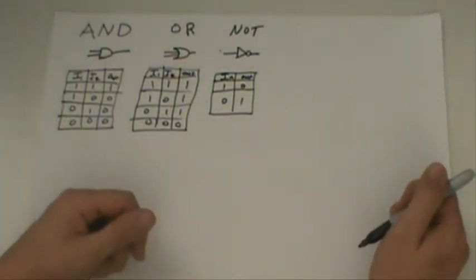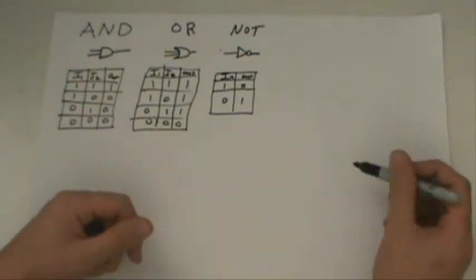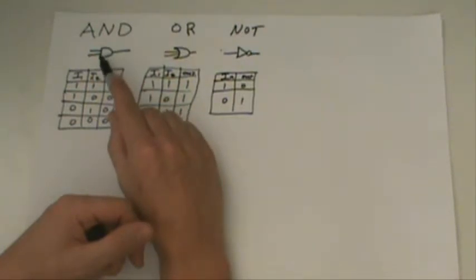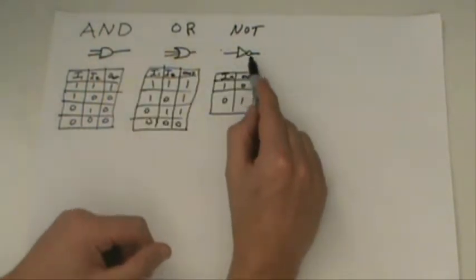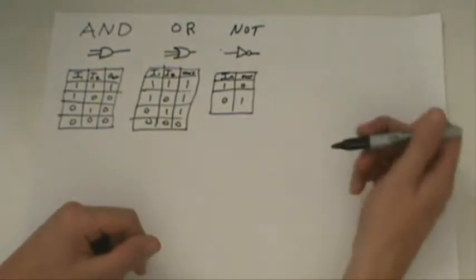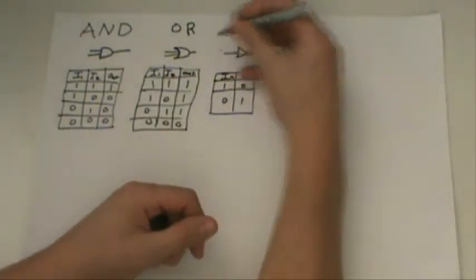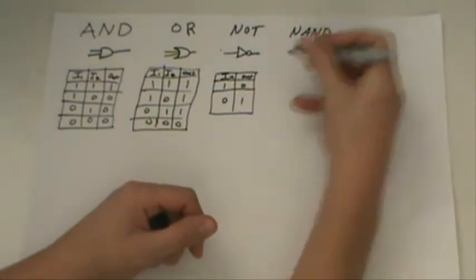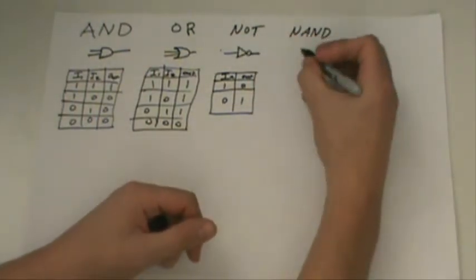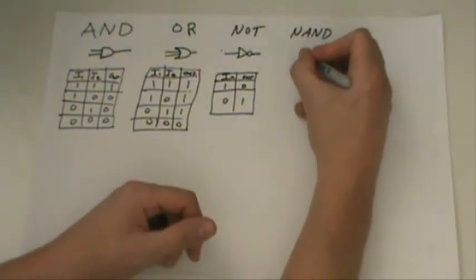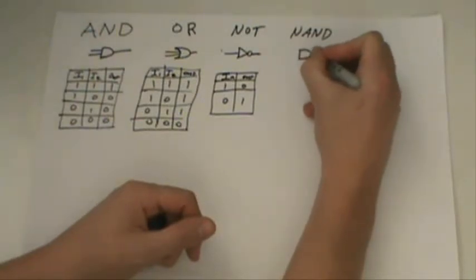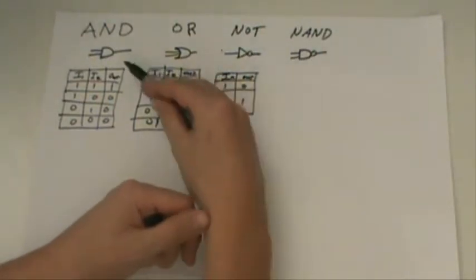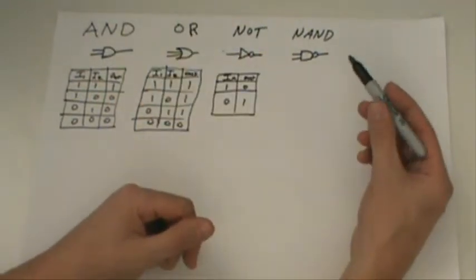The next one is kind of a combination. So, if AND and NOT were to combine, let's say they had a kid, right? And they named the kid NAND, kind of combined their two names together and came up with that. And this is what their kid looked like. So we got this right here and just add the little circle at the end of AND and there you have NAND.